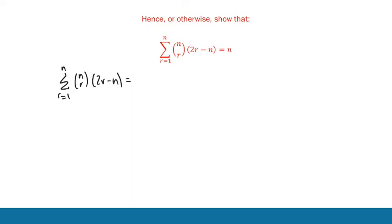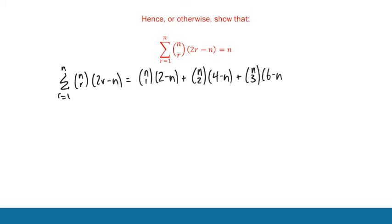We're taking the sum from R equals 1 to N of N·C·R times (2R − N). Expanding that out, the first few terms in full are: N·C₁·(2 − N), plus N·C₂·(4 − N), plus N·C₃·(6 − N), and the last term will be N·Cₙ·(2N − N). What we see here is that we have things in two pairs: the constant numbers times the coefficients, and then the N's times the coefficients. So let's do one of them at a time.